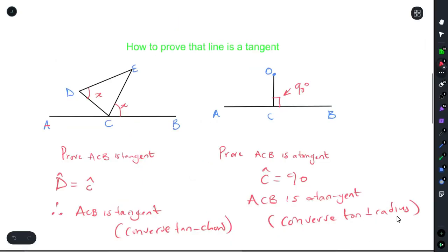And this is exactly how you prove a line is a tangent. Now I know all this is looking a little bit weird, so we're going to do an example of this to help you guys understand this a little bit better.